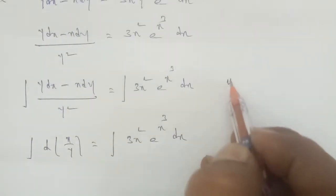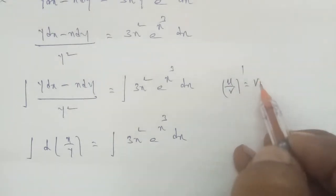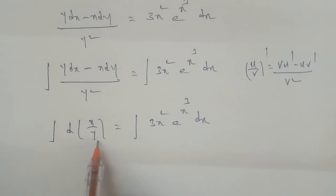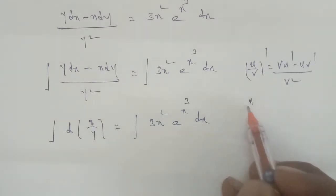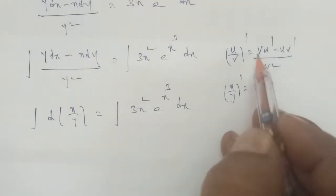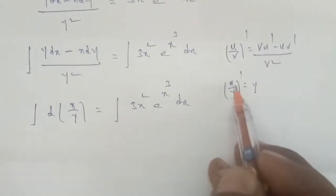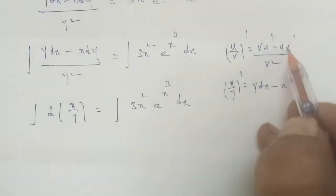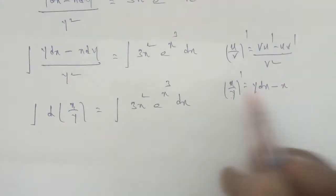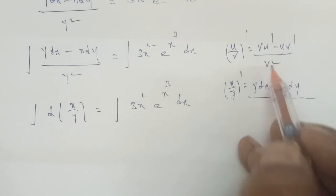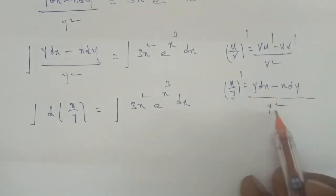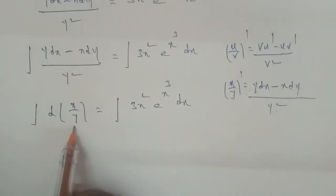Using the u by v formula — the quotient rule — d(u/v) equals v u dash minus u v dash over v squared. Here u is x and v is y, so the middle term gives us y dx minus x dy divided by y squared. This is exactly the differential of x by y.